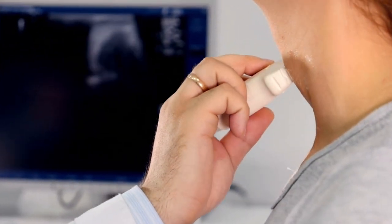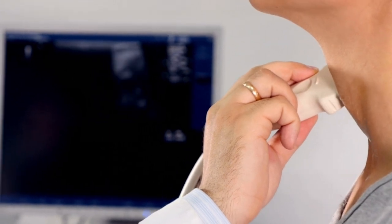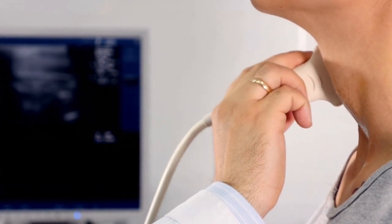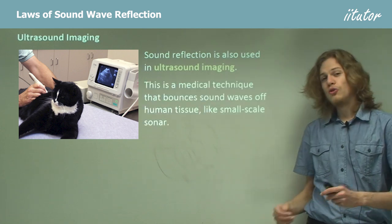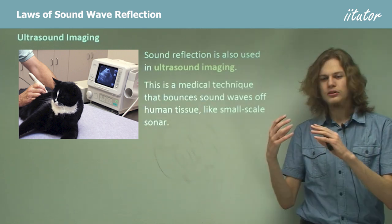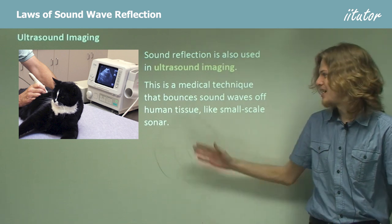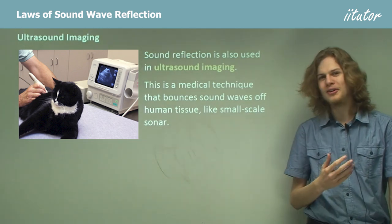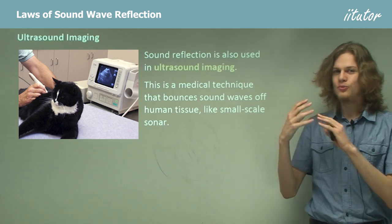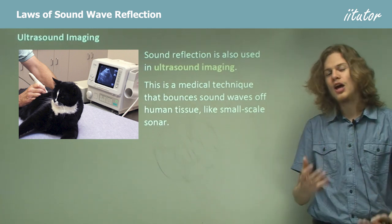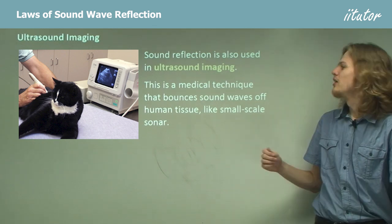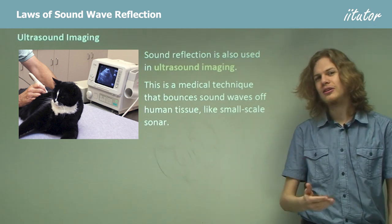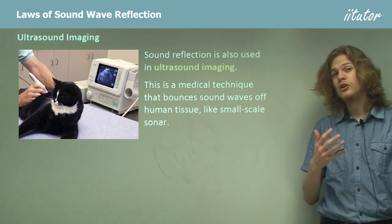We can also use ultrasound on a smaller scale. Ultrasound imaging is a technique used to image the inside of a human being — or in this case, a cat. We send ultrasound pulses into the tissue or flesh of a patient, and as the sound waves pass through different media inside the body they create reflections, which we pick up as echoes. It's a bit like sonar on a smaller scale: instead of measuring the depth of water, we're measuring the depth of different parts inside a body, which allows us to build up an image of what's inside.